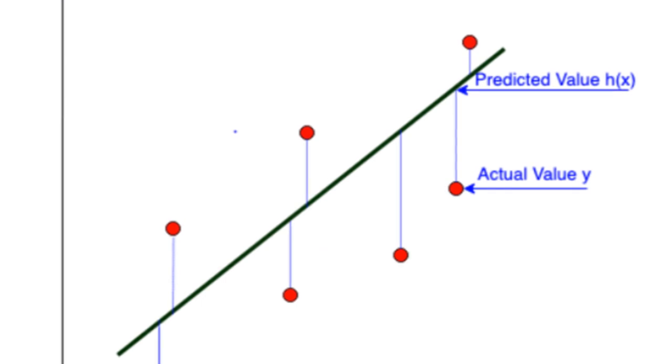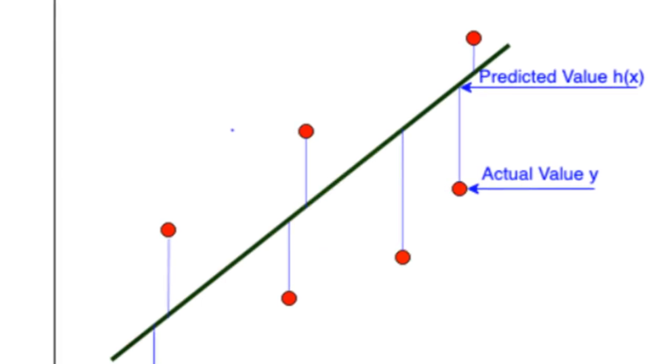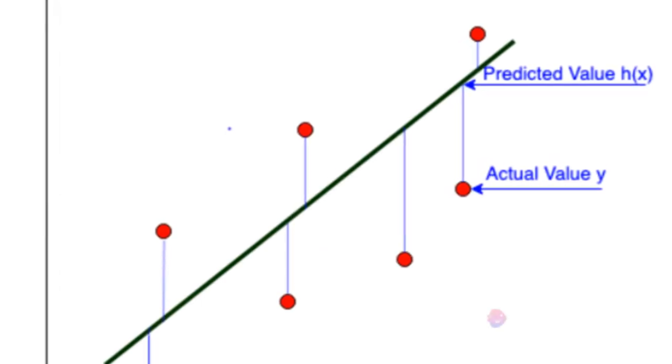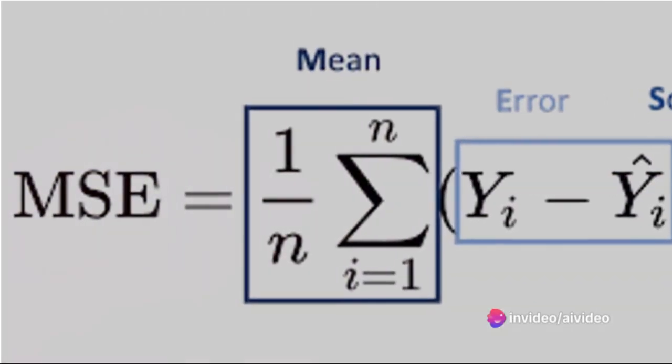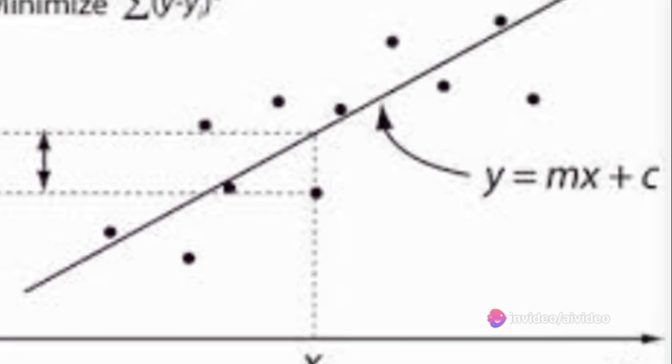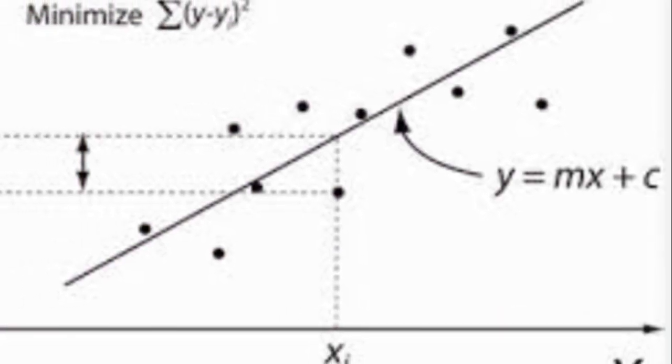So if the actual weight and predicted weights differ, the mean squared error will indicate this discrepancy. The value of the mean squared error will change based on the values of M and C. The goal is to find the optimal values for M and C that minimize the mean squared error.